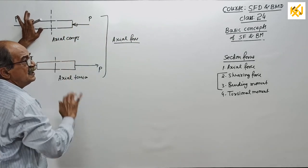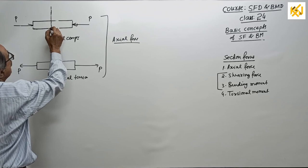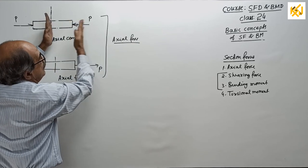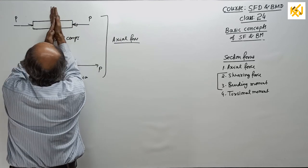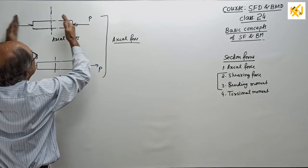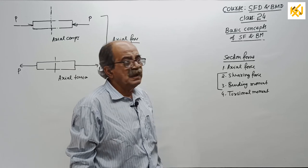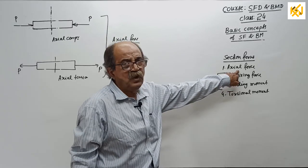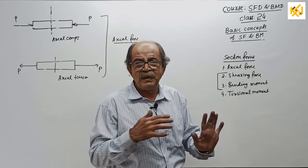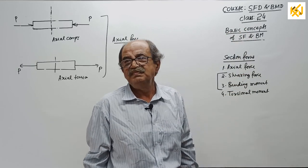Regarding axial force: if you want axial force, you take a cross-section and consider only one side. If you look one side — P, compression; or look the other side — P, still compression. For any cross-section, the axial force is a compressive force of P. Similarly, for the tension case, tensile force of P.